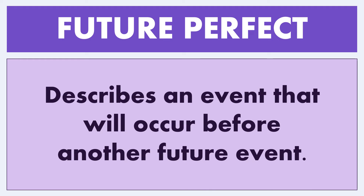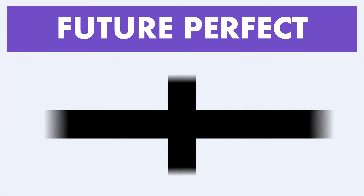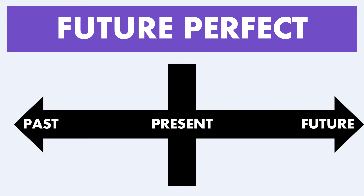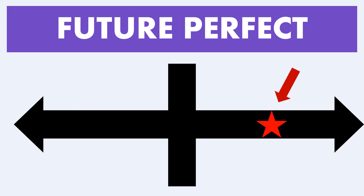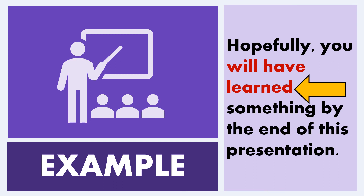Let's take a look at future perfect. This describes a future event that will occur before another future event. What to look for: the word 'will' and 'have' paired with a past tense verb. For example: 'Hopefully, you will have learned something by the end of this presentation.' Here, 'will' indicates a future tense scenario, 'have' paired with the past tense verb 'learned' indicates the perfect mood — giving us the future perfect.